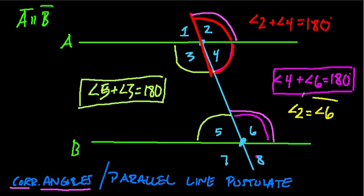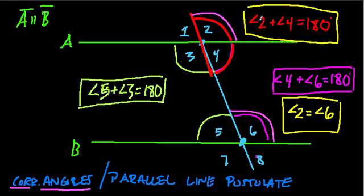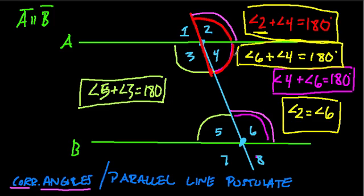Well, if 2 equals 6, and I have this equation up here, what can I do? Well, instead of writing angle 2 plus 4, I could write angle 6 plus 4. Why? Because 2 and 6 are equal. So I'm just swapping one for the other. And if I add them up, what do they have to equal? Well, they have to equal 180 degrees. And that's the basic idea about why interior angles have to add up to 180 degrees. All right. Hope that helped.